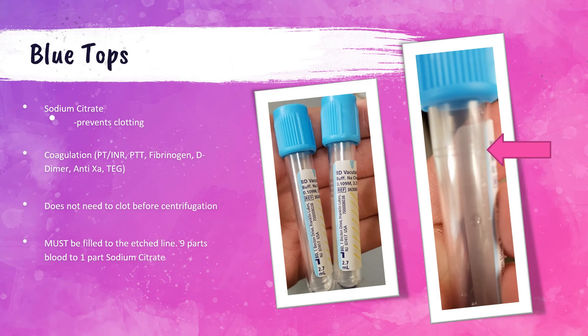After blood cultures are drawn, next come the light blue top tubes. These contain sodium citrate, which acts as an anticoagulant that prevents the blood in this tube from clotting. Light blue tops are used for coagulation tests in the laboratory — pro time/INR, PTTs, fibrinogen, D-dimers, anti-Xa assays, thromboelastograph (TEG) studies, and any other specific clotting factor assays. The blood in the specimen should not clot, and if a clot is present the specimen must be redrawn.